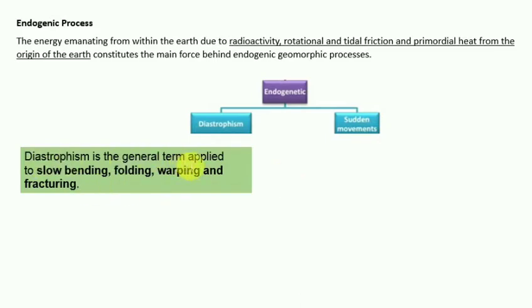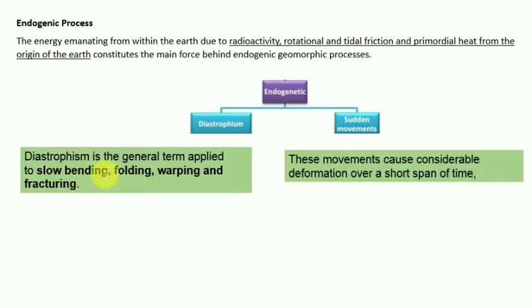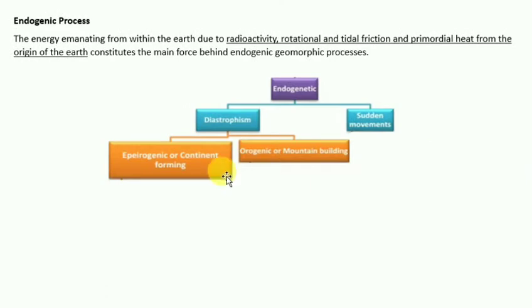These slow movements take a lot of time and cause considerable deformation. Diastrophism is divided into apodogenic — also called continent forming — and orogenic — also called mountain building. Apodogenic movement refers to upheavals or depression of land, exhibiting long wavelength undulation and little folding.